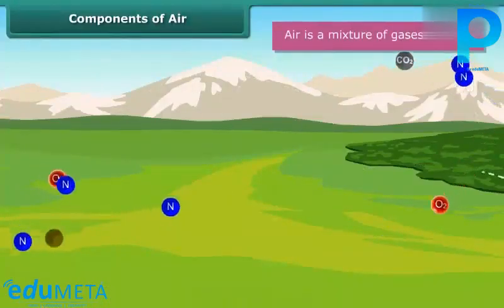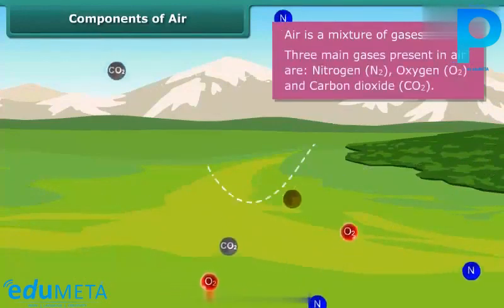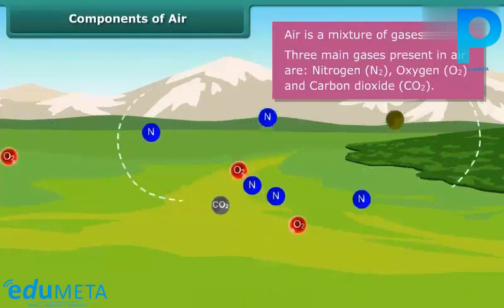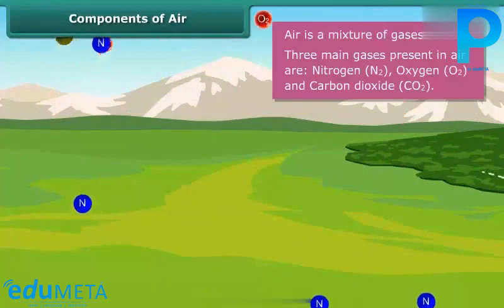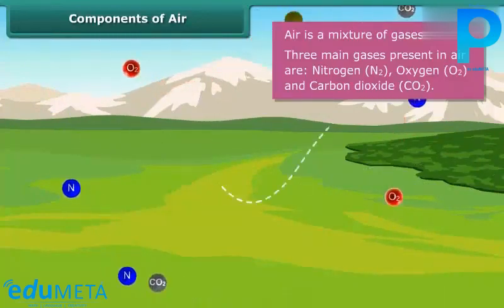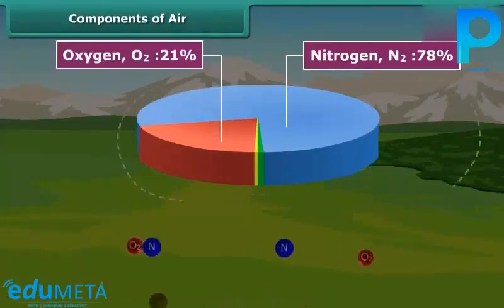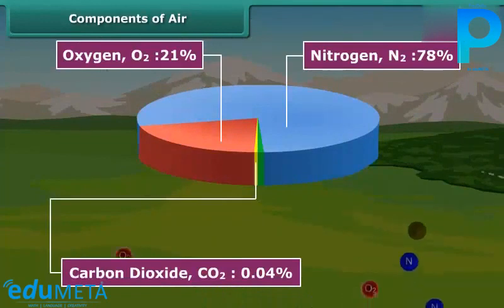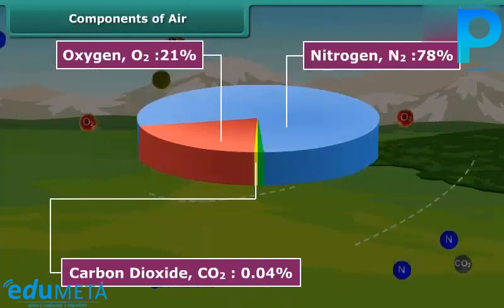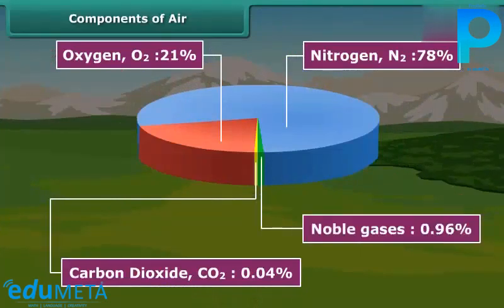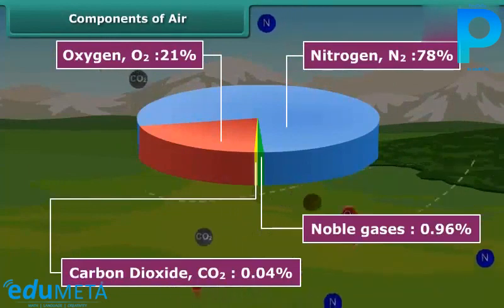Air is a mixture of gases. The three main gases present in air are Nitrogen (N₂), Oxygen (O₂), and Carbon Dioxide (CO₂). Nitrogen forms 78%, Oxygen 21%, and Carbon Dioxide 0.04% of the air. Besides these three gases, air also contains water vapour, dust particles, and some other gases known as noble gases. Since the noble gases are present in negligible quantities, they are known as rare gases.